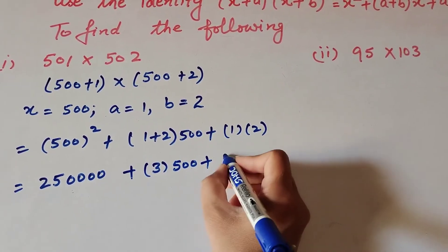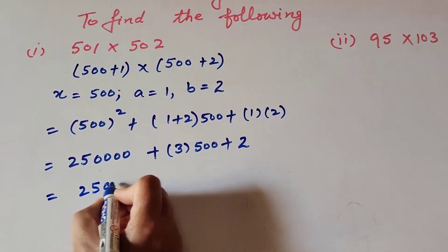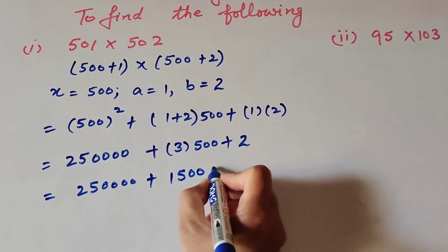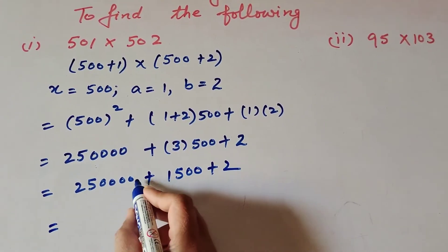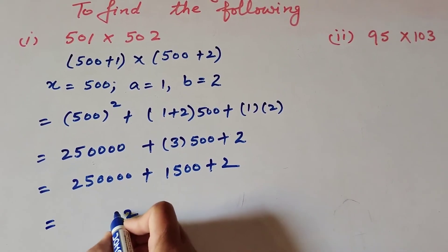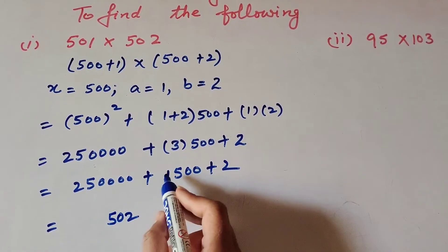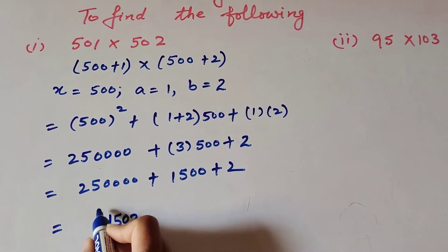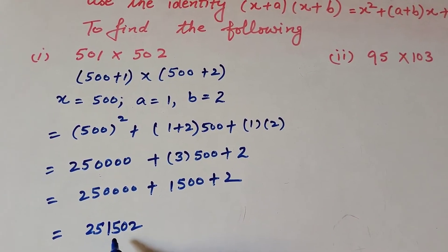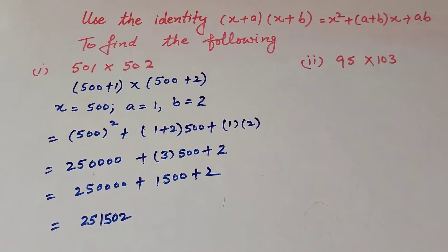Plus 1 × 2 = 2. Now 250,000 + 3 × 500 = 1,500 + 2. Adding them: 250,000 + 1,500 + 2 = 251,502. So the product of the two numbers is equal to 251,502.